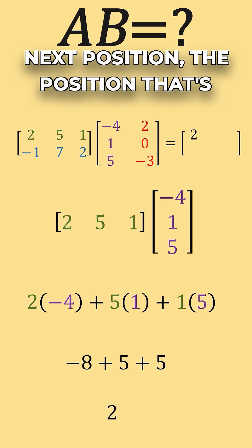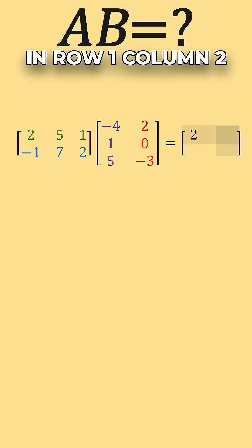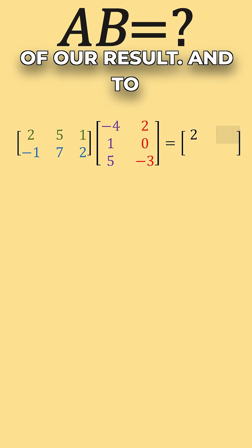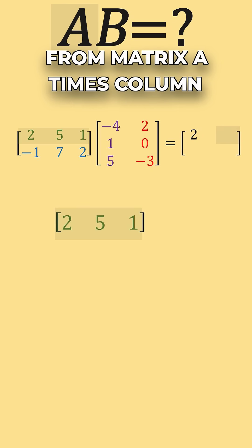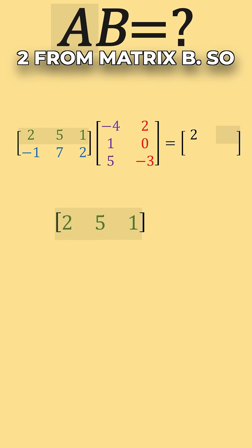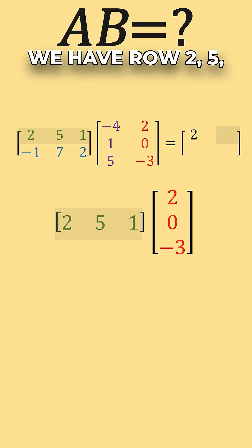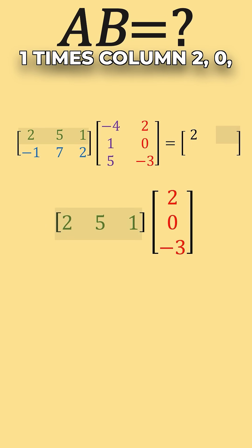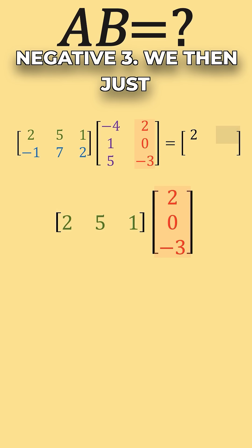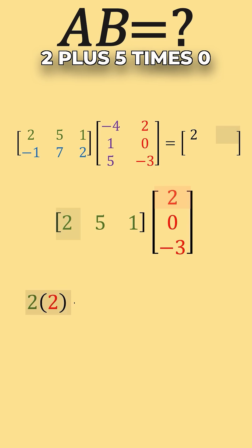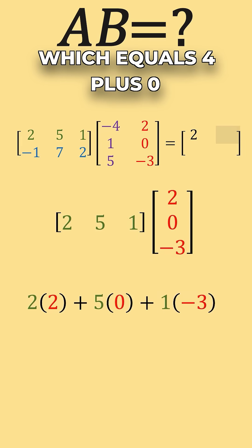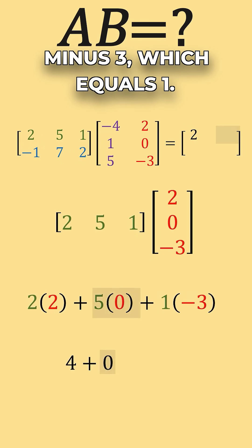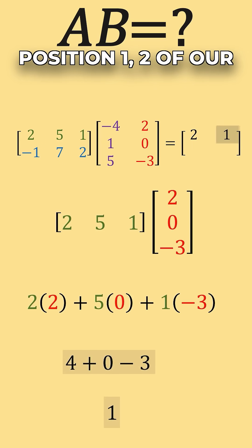Moving to the next position — row 1, column 2 of our result — we multiply row 1 from matrix A times column 2 from matrix B. So we have row 2, 5, 1 times column 2, 0, negative 3. We get 2 times 2 plus 5 times 0 plus 1 times negative 3, which equals 4 plus 0 minus 3, which equals 1. So 1 goes in position row 1, column 2 of our result.